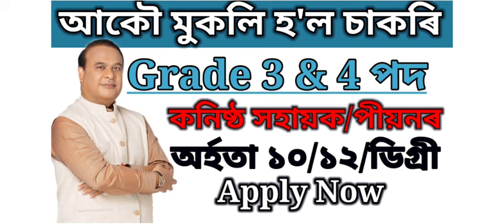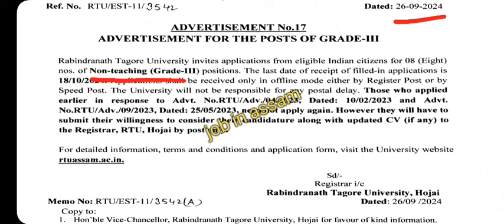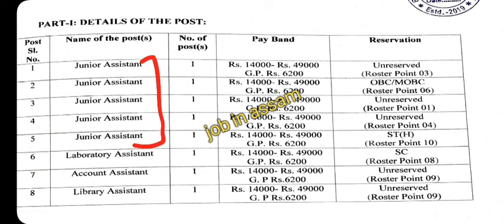First, we have Grade 3. We have official notice, and we have pay scale 2527-2727, and we have non-teaching Grade 3. In the details, we have junior assistant, laboratory assistant, account assistant, library assistant. So we have for 15,000 points.